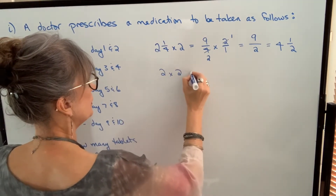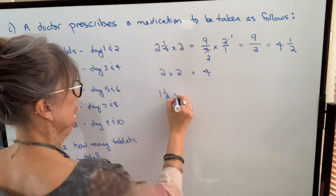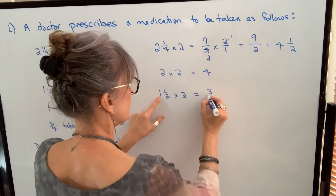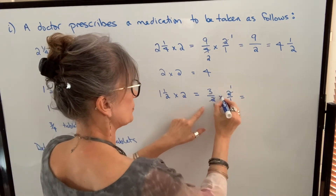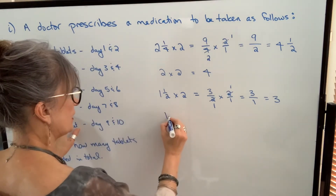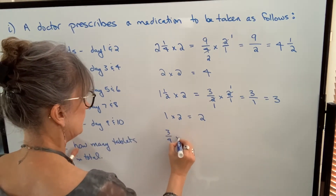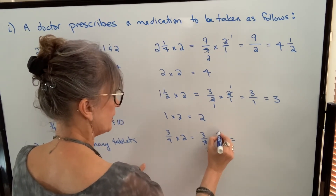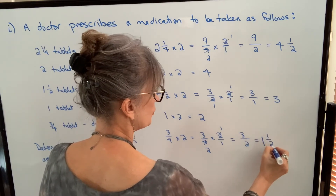For day five and six, one and one half tablets times two: convert to improper fraction — one times two plus one is three halves — times two over one. Cancel the two from numerator and denominator, multiply: three over one is three tablets. Day seven and eight, one tablet times two is two tablets. Day nine and ten, three quarters times two over one: cancel the two to get three halves, which expressed as a mixed number is one and one half.